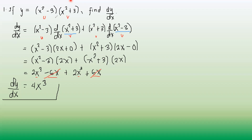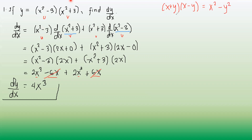This example can also be simplified using special product formulas. If we have x plus y multiplied by x minus y, the result will be x squared minus y squared — this is the product of the sum and difference of the same two terms. When multiplied, the result is the difference of two squares.